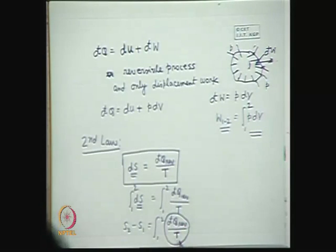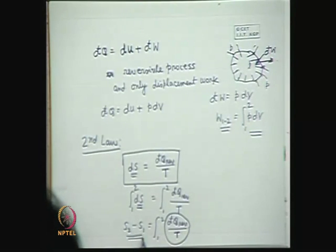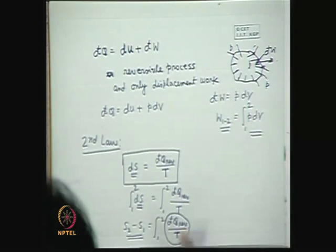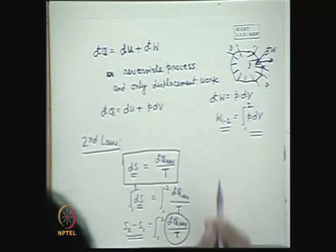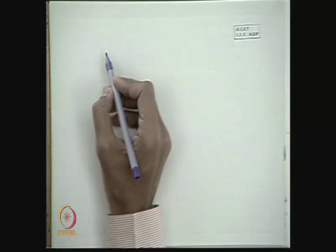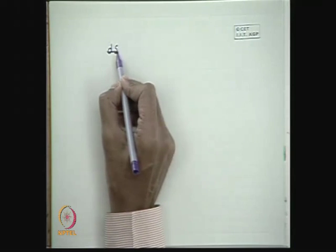One interesting thing is that the heat transfer dQ_reversible is a path function — it does not depend only on state points. But if it is divided by T, it becomes an exact differential equal to dS, which is integrable from 1 to 2. Therefore, 1/T acts as an integrating factor which, when multiplied with dQ, gives the definition of a point function — precisely the definition of entropy.